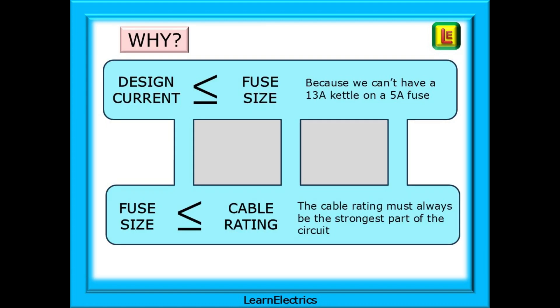Why does this matter? The design current cannot be greater than the fuse or breaker size. For example, we cannot have a 13 amp kettle on a 5 amp fuse. Every time it's switched on, the fuse will blow. And the cable rating must always be the strongest part of the circuit and chosen for its current carrying capacity for that particular circuit's installation conditions. It is chosen so that it does not exceed the limiting temperature before the protective device operates and to not exceed the voltage drop limit. It is easier to change a fuse than it is to rewire a whole circuit.